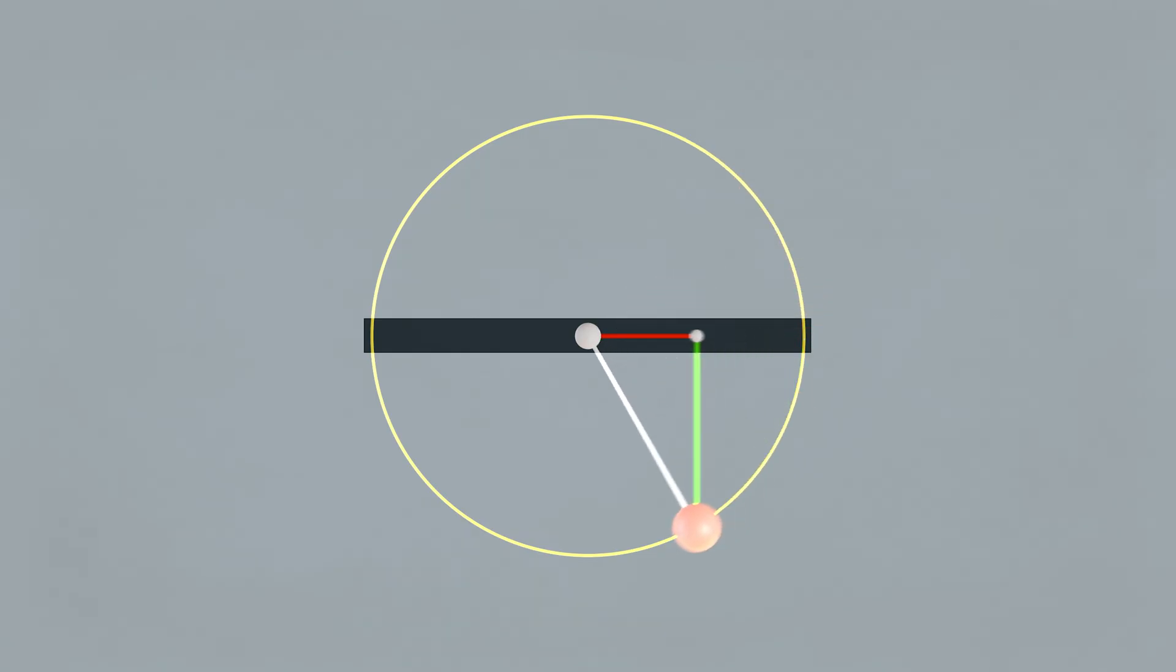Observe the x-pointing axis. It grows and shrinks to values between negative and positive 1, depending on the angle between ORB and center. Same goes for the y-axis.